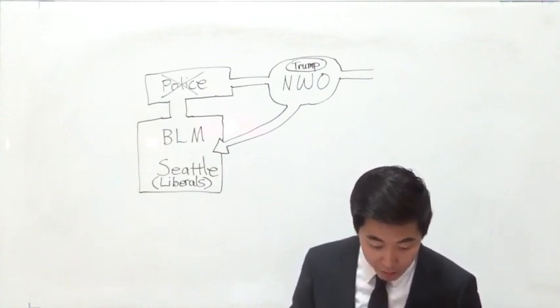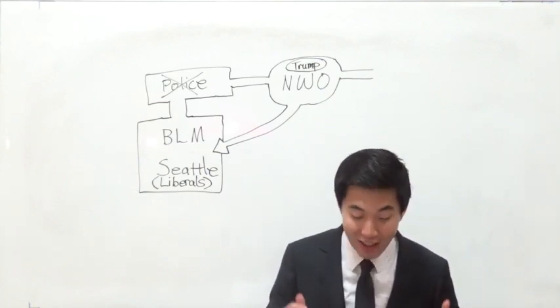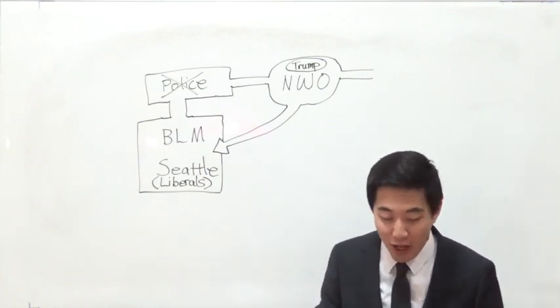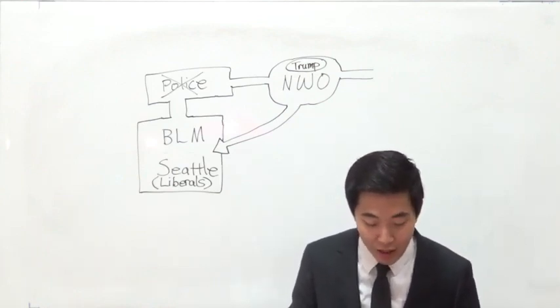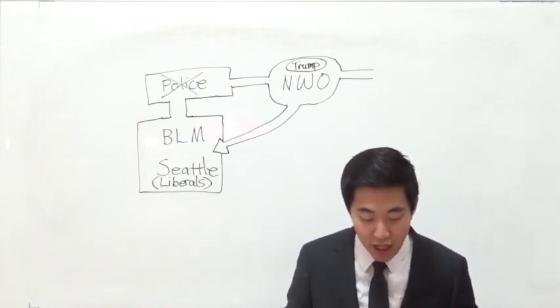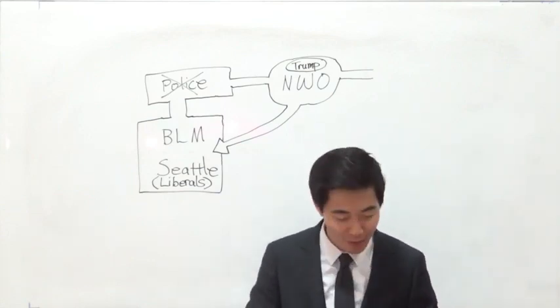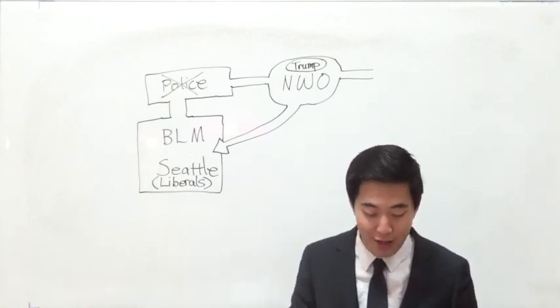They also said over here, proponents of the movement, now this is what I find to be hilarious, okay? The proponents of that movement say the reallocated funding to address other social needs would actually reduce crime. It would reduce crime. This is what they said. I cannot comprehend this.